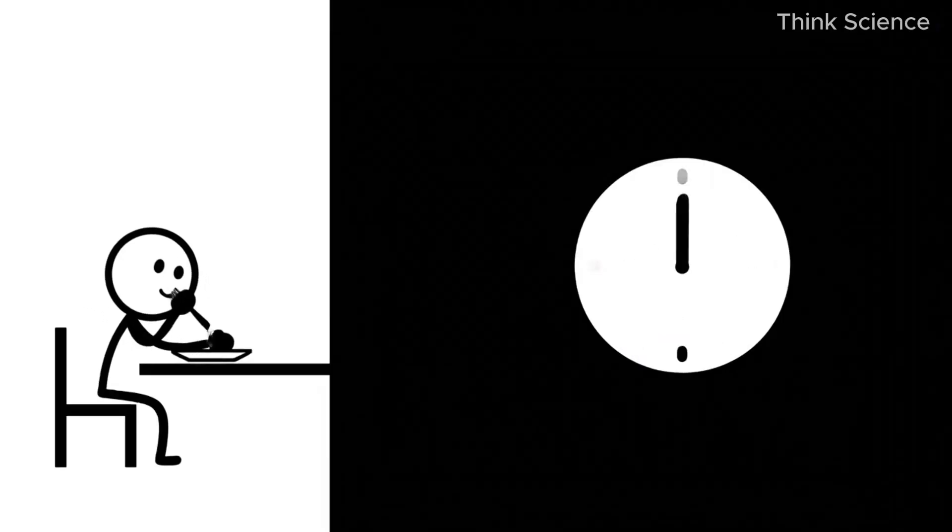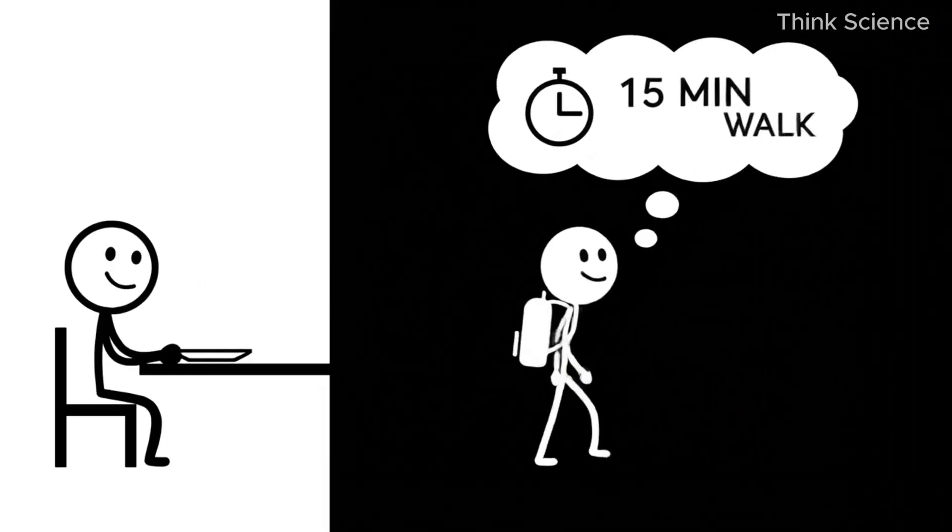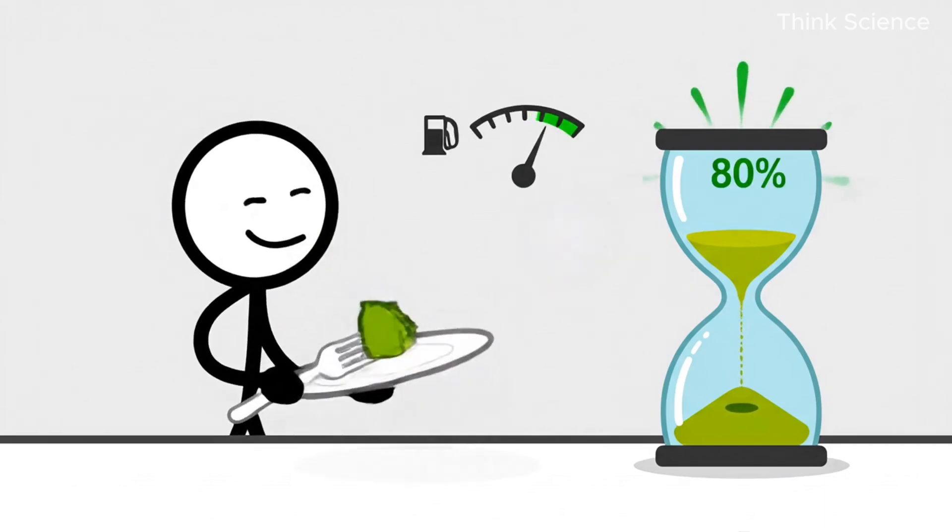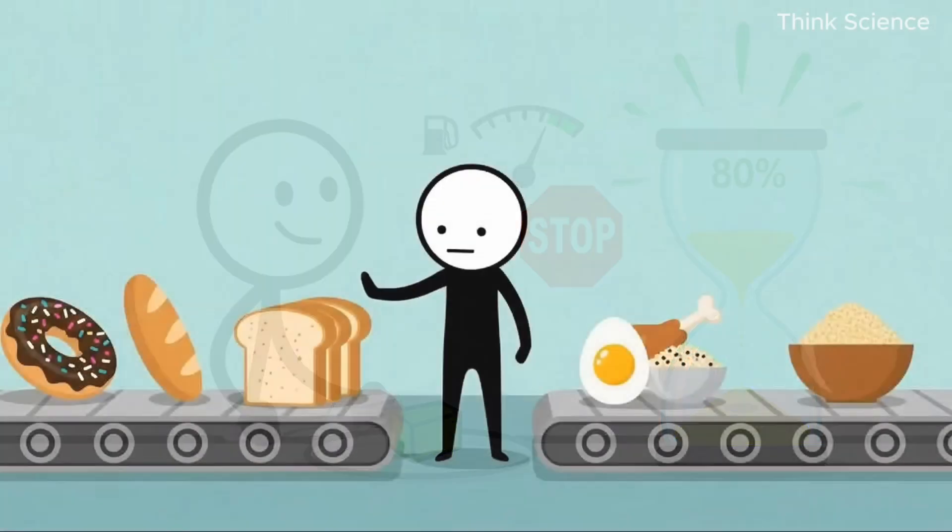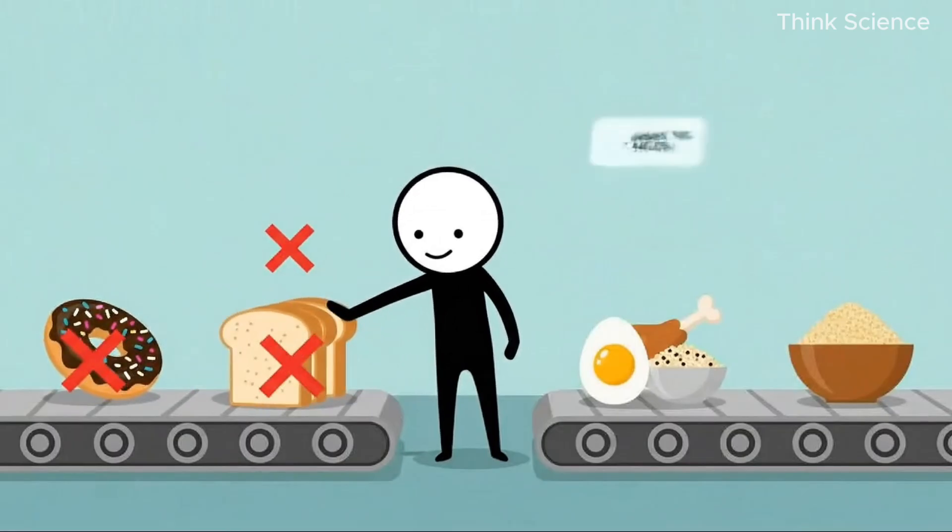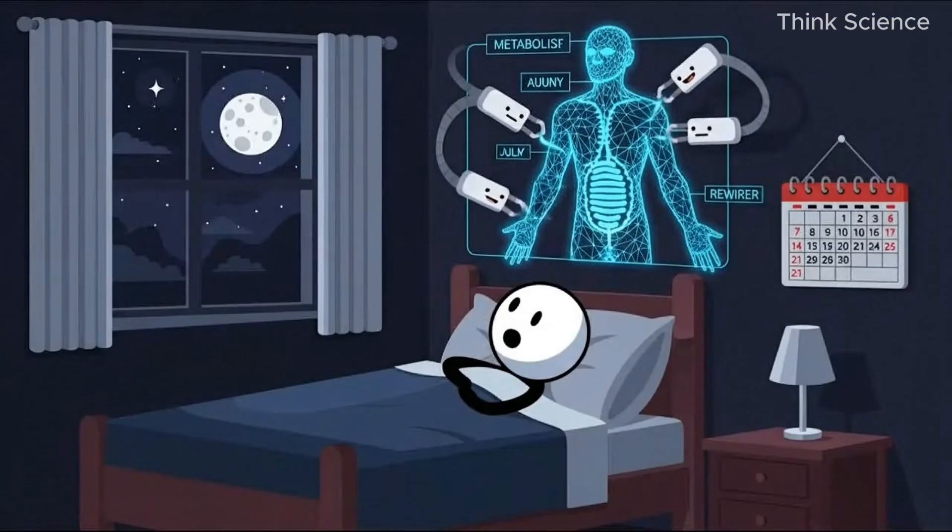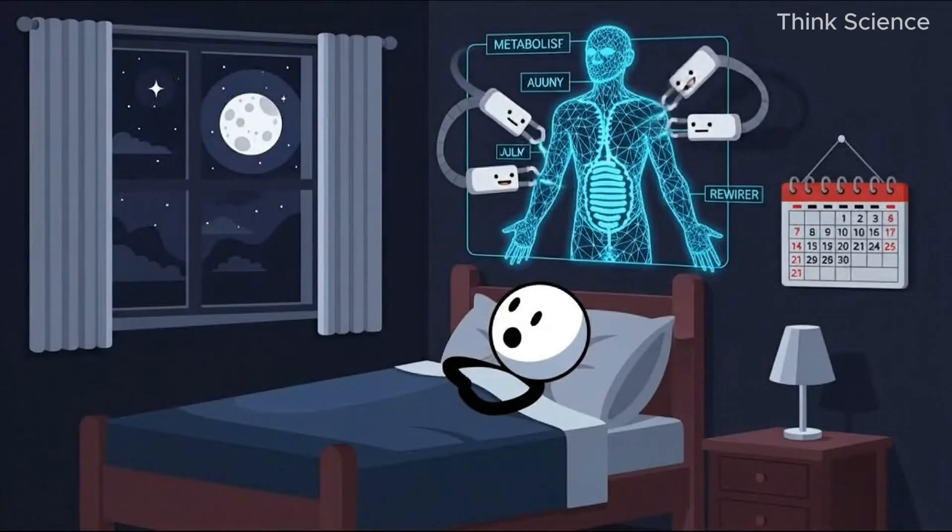Walk 10 to 15 minutes after each meal. Eat slowly for 15 minutes. Stop at 80% full. Choose protein in every meal. Swap refined carbs for whole foods. Fix your sleep. This habit-based approach takes longer, but it rewires your entire metabolism.